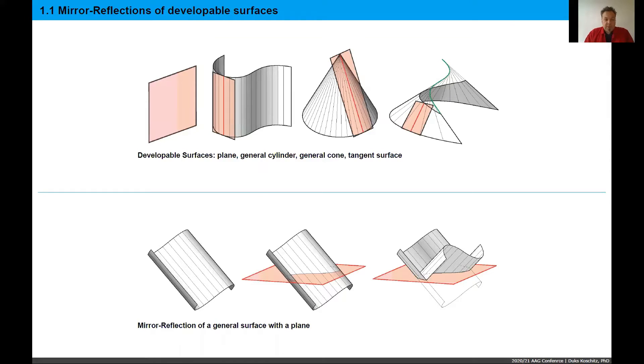The principal developable surfaces that exist are the plane, the general cylinder, the cone, and the tangent surface, which is depicted here in the upper diagram on the right, where the green curve is called the edge of regression, which is where all the tangents meet. So these are the only surfaces that we can use.